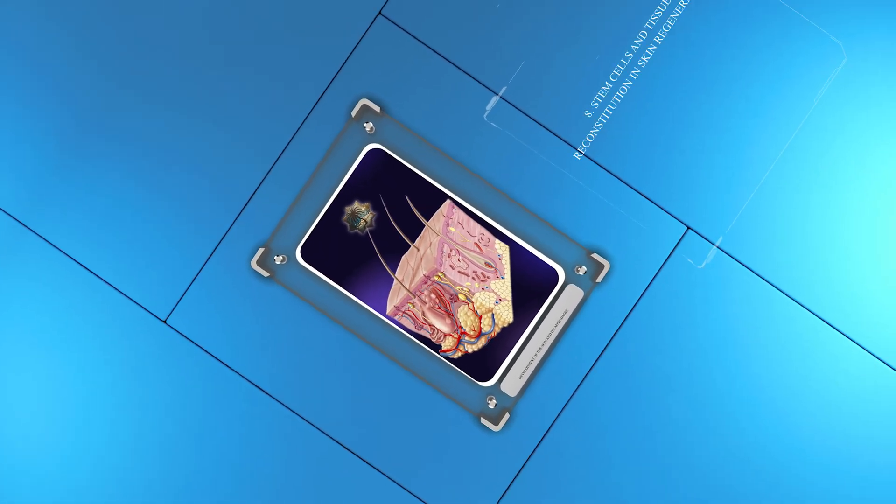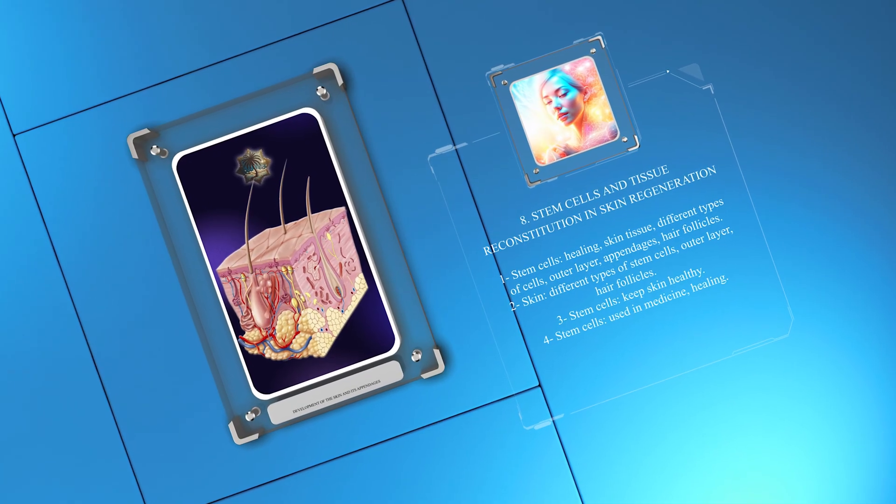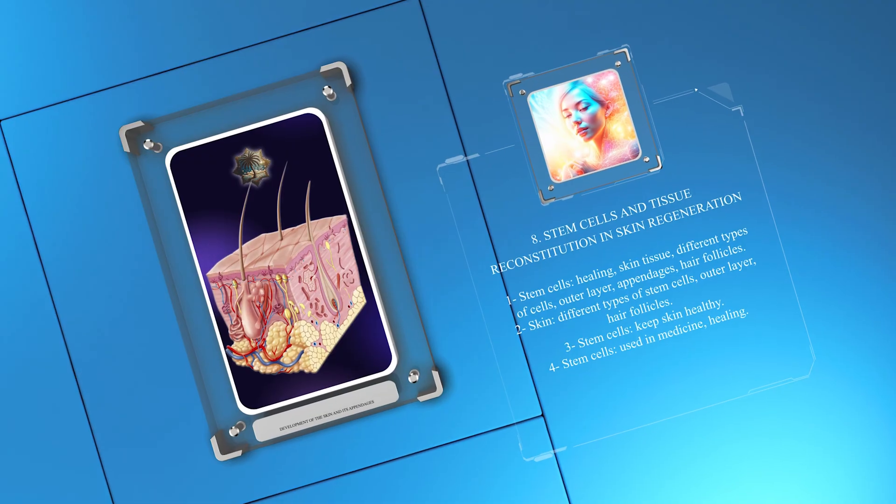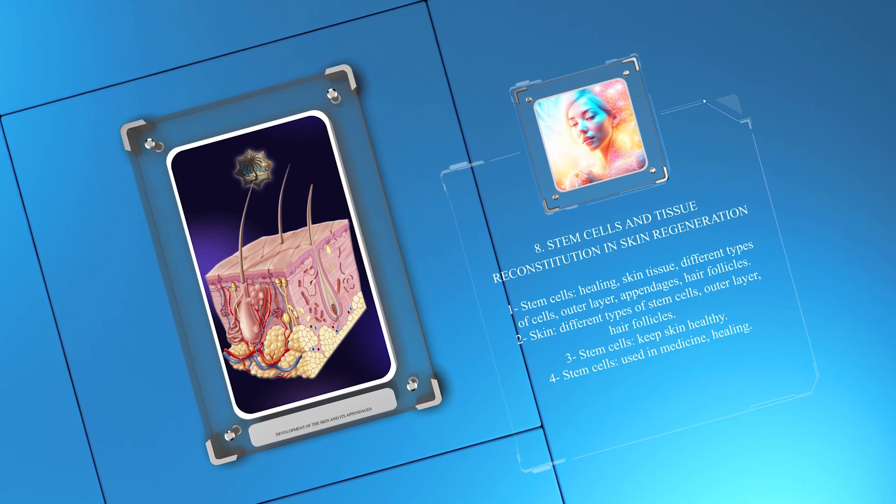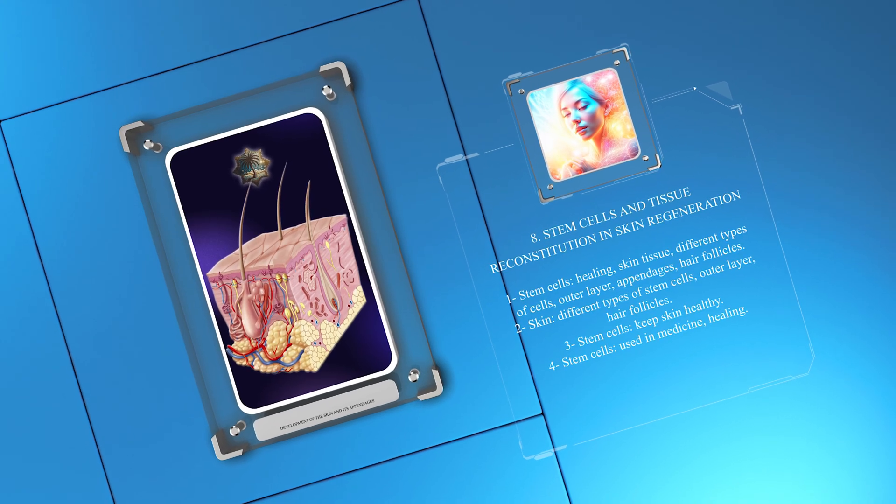Stem cells are important for the healing of skin tissue. They can differentiate into different cell types in the skin, including those in the epidermis and appendages. The skin has different types of stem cells, such as epidermal and hair follicle stem cells. These stem cells help maintain skin health and have therapeutic potential for tissue regeneration.